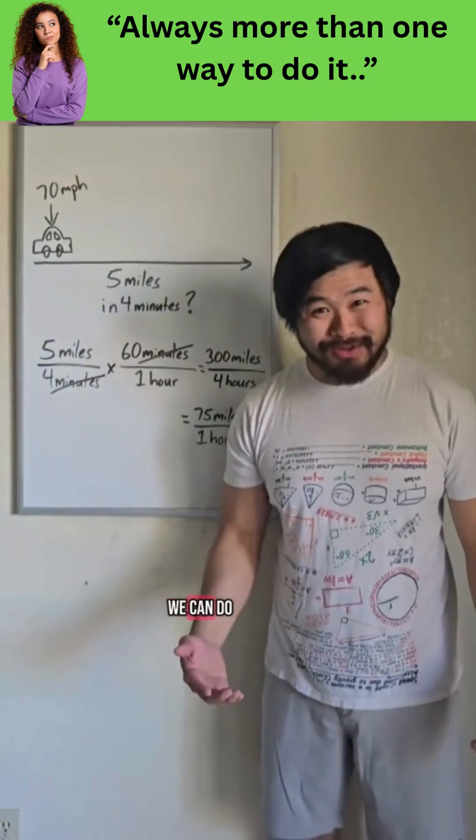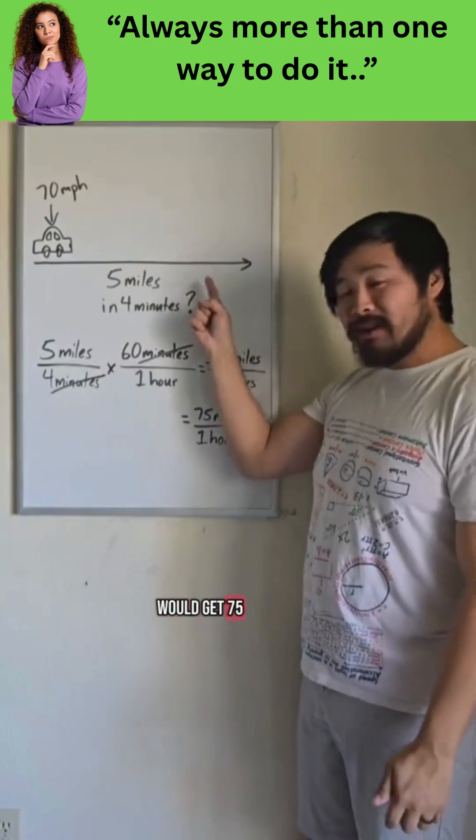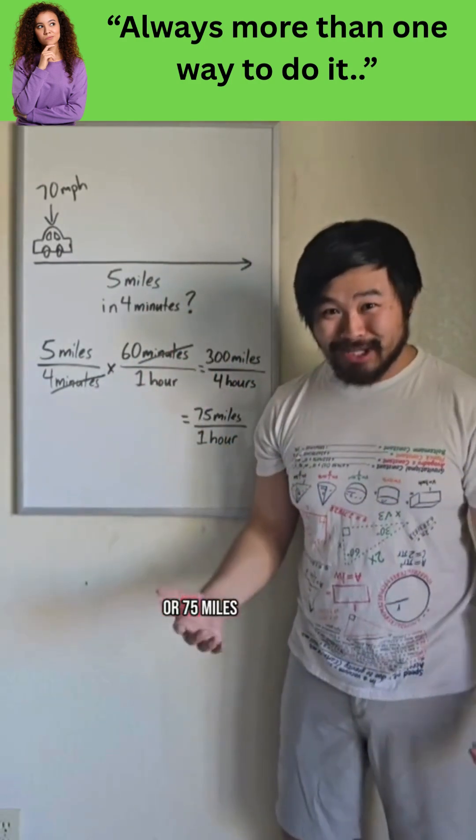And another way we can do this is to multiply both of these quantities by 15. Because when we do, we would get 75 miles in 60 minutes, or 75 miles per hour.